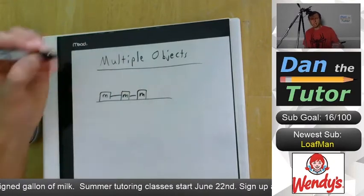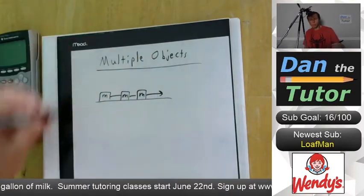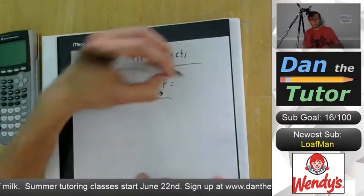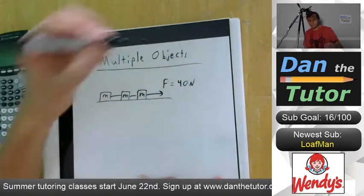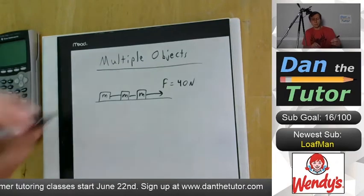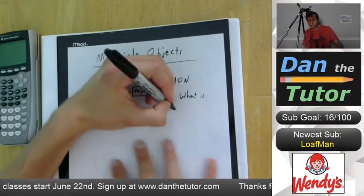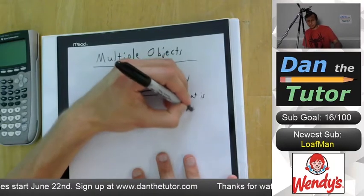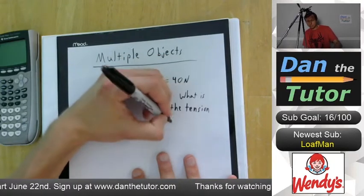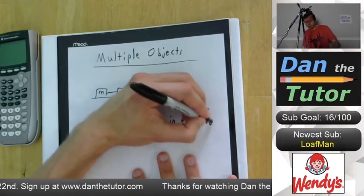Each box has mass m and they're being pulled with the force F equals 40 newtons. And I want to know what is the tension in each rope.